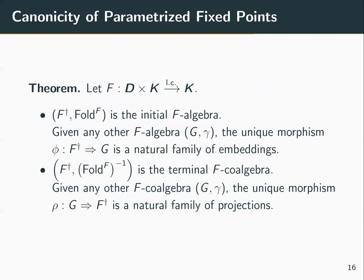Just as we hoped and expected, the parametrized fixed point operator gives us initial F-algebras and terminal F-coalgebras. In particular, (F†, fold(F)) is the initial F-algebra, and the mediating morphism from any other F-algebra is a natural family of embeddings. Dually, (F†, fold(F)^{-1}) is the terminal F-coalgebra, where the mediating morphism from any other F-coalgebra is a natural family of projections.